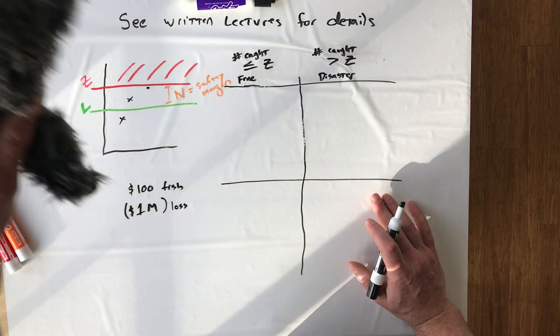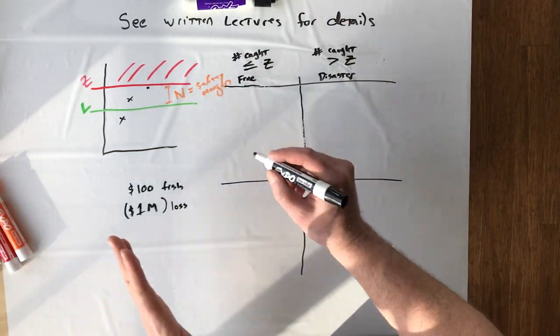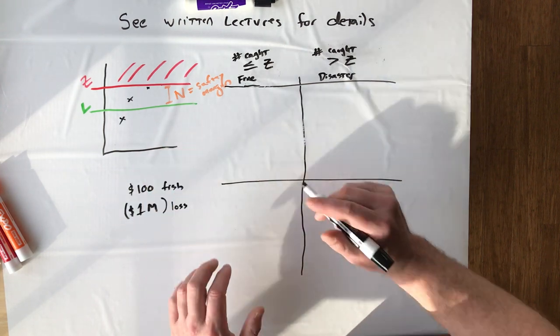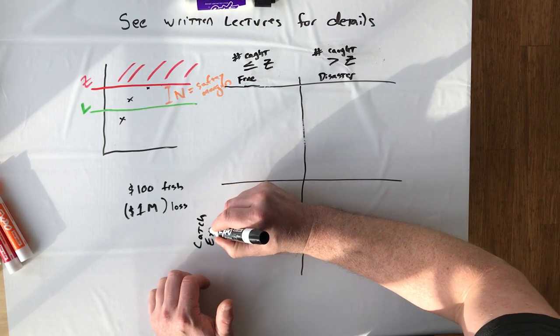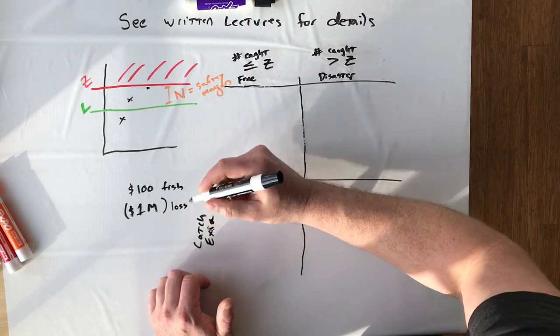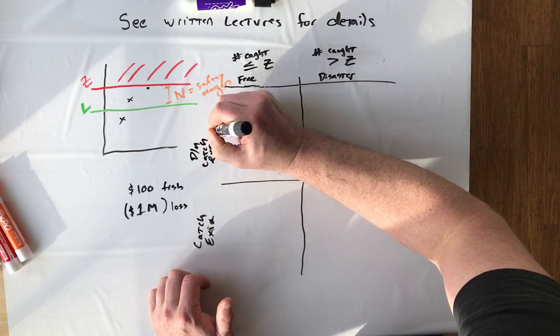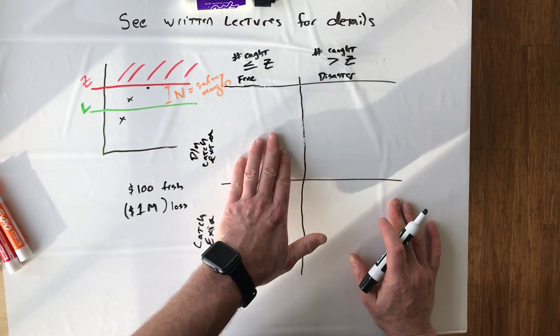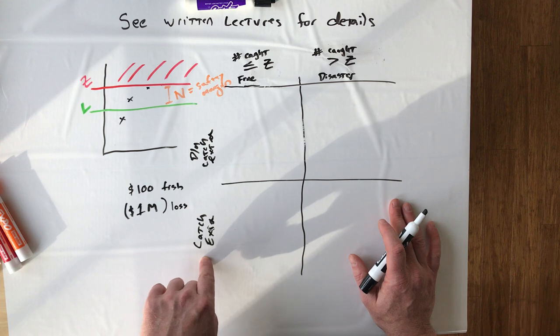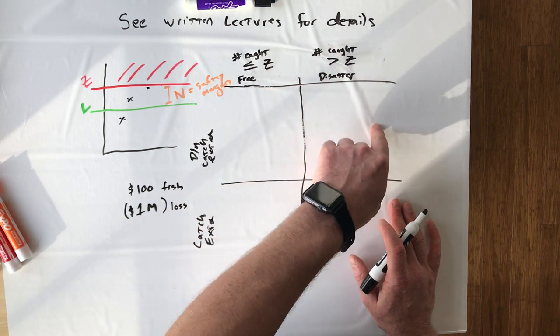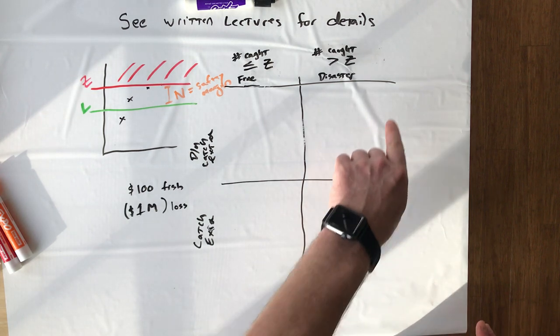There's two futures where the number of fish that we catch total ends up being less than or equal to Z. And in that scenario, everything's fine. We go on, we have enough fish for next year. It's great. Or we catch more than Z and we're all screwed. We have a disaster. Everybody's going to have a million dollar loss. And so if you make the columns the futures that you can be in, the rows are going to be your choice. So if you think back to the prisoner's dilemma, this is where rabbit came in. Rabbit was the rows. The world here is in the place of red dog. So the choice that any one of us has to make is between catch extra and don't catch extra.